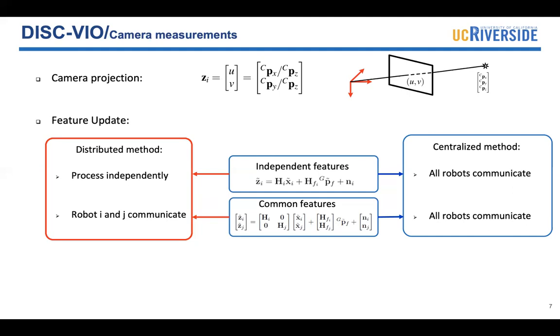For the common features, here, like the common features observed by robot I and robot J, robot I only needs to communicate with robot J. However, if you choose a centralized method, even for the independent features, robot I needs to communicate with the other robots. And for the common features, robot I not only needs to communicate with robot J, it needs to communicate with all the other robots because there exists cross covariance between robots.